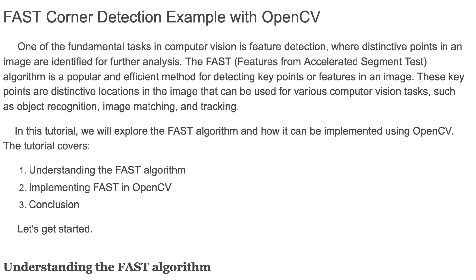These key points are distinctive locations in the image that can be used for various computer vision tasks such as object recognition, image matching, and tracking. In this tutorial we'll briefly learn the FAST algorithm and how it can be implemented using OpenCV in Python. This tutorial covers understanding the FAST algorithm, implementing FAST in OpenCV, and conclusion. Let's get started.